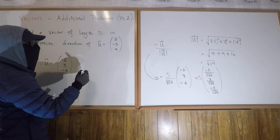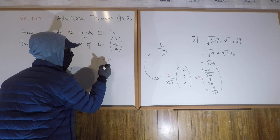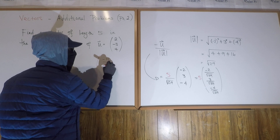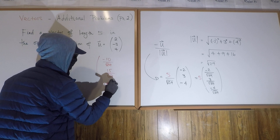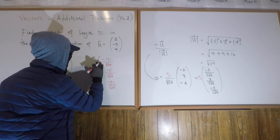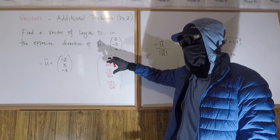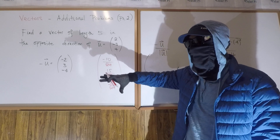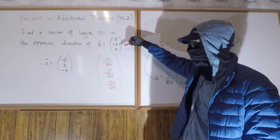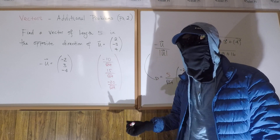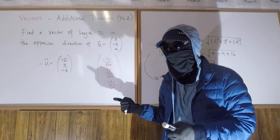So our final answer — one possibility of what this vector could be — is (-10/√29, 15/√29, -20/√29). I say one possibility because we can keep this vector as long as it is and just shift it, so there are actually infinitely many representations, but they are all the same vector — different positions but the same direction and length.